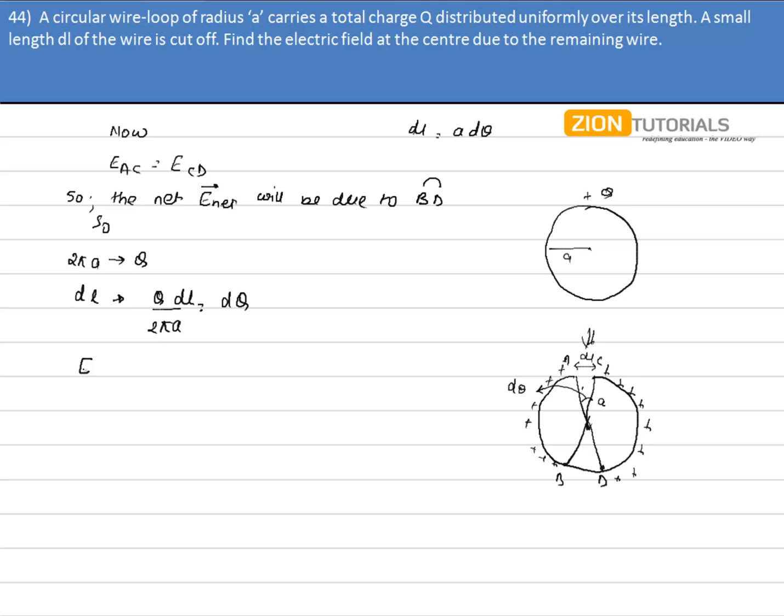So, the electric field that will be produced by this DQ charge will be given by K DQ by A square. This is given by K DQ into DL divided by 2πA cube.